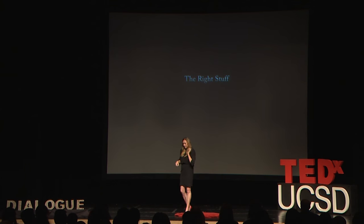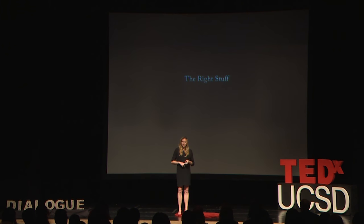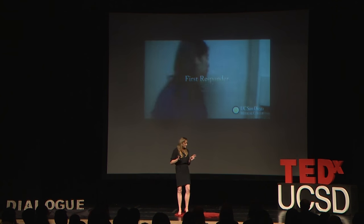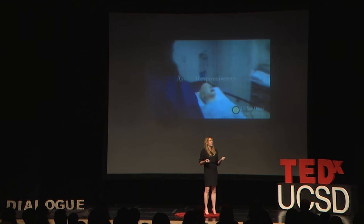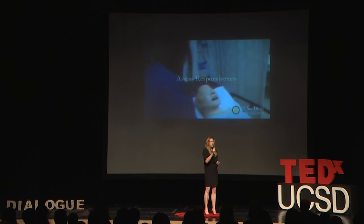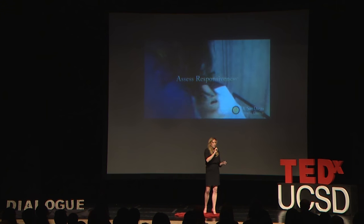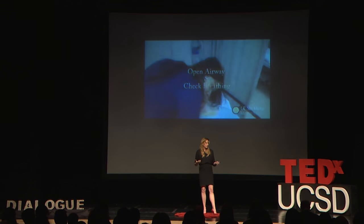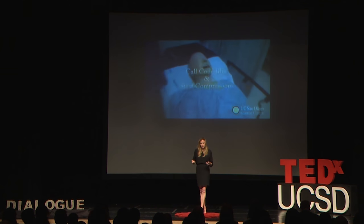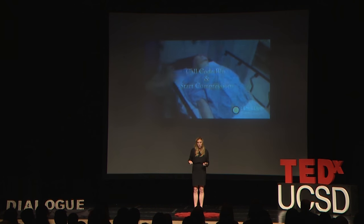I remember the first time I worked to save a person's life. In medicine, to save a life, we use the ABCs — and you thought medicine was difficult. A is for airway. A tube is placed in the patient's mouth, down their throat, into the airway tube called the trachea. This is used to breathe for the patient during a code.